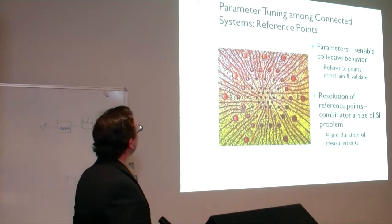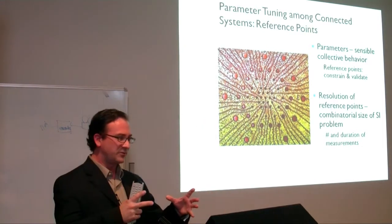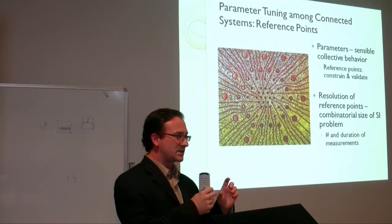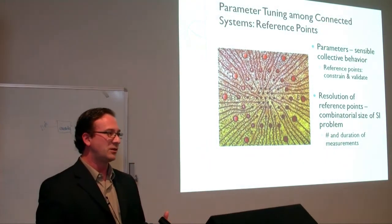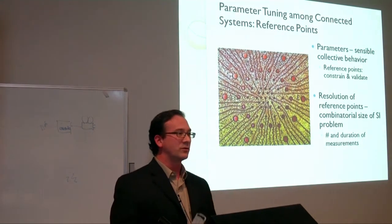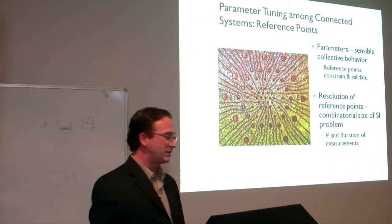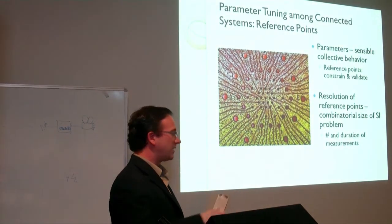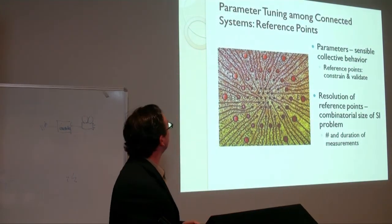Even with all this structure, you still don't have all the parameters for a functional model. The best way to get those is to record from each part in the living specimen — find reference points and record activity, seeing the shape of the signal and how it responds.